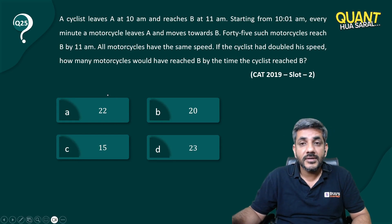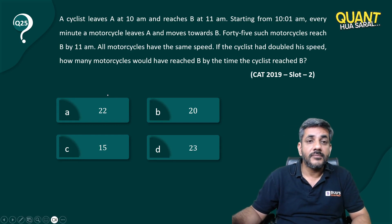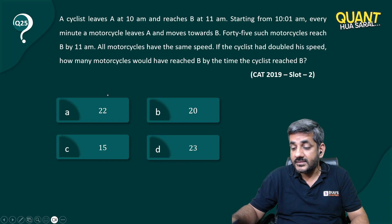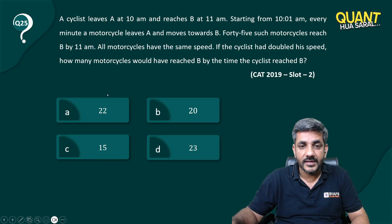Let's have a look. A cyclist leaves A at 10 am and reaches B at 11 am. Starting from 10:01 am, every minute a motorcycle leaves A and moves towards B. Forty-five such motorcycles reach B by 11 am and all motorcycles have the same speed. If the cyclist had doubled his speed, how many motorcycles would have reached B by the time the cyclist reached B? That's what the question is.